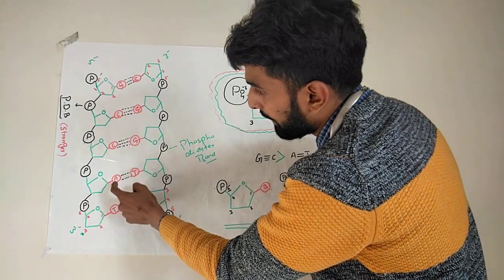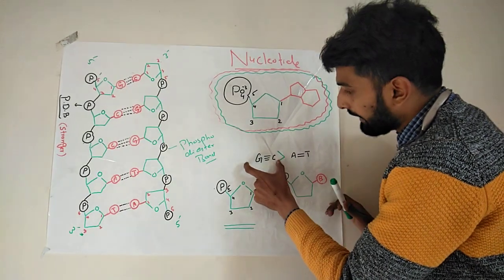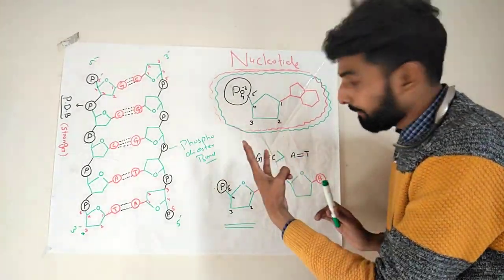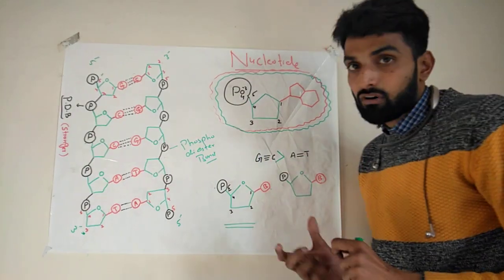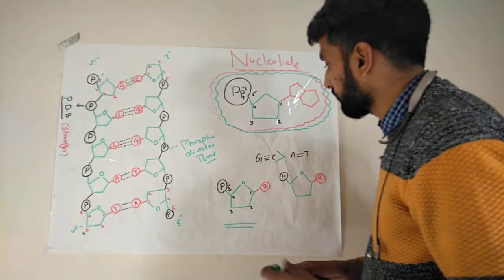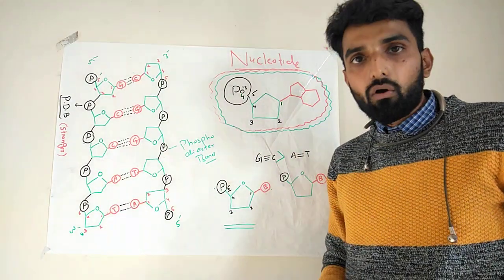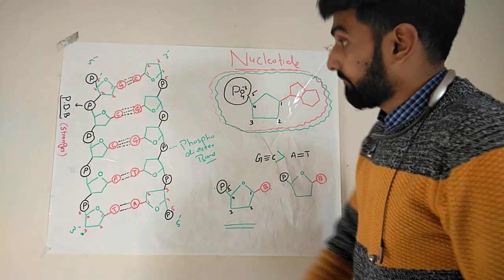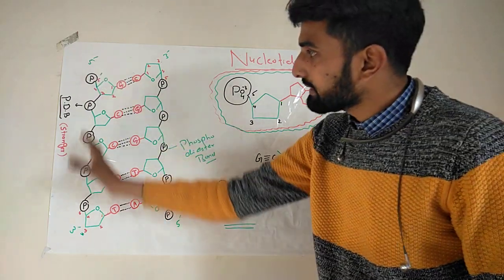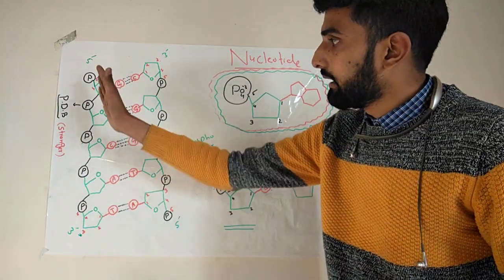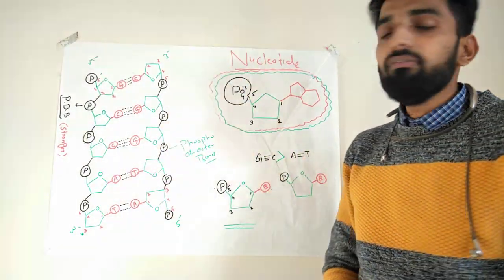If we compare the bond between adenine-thymine and cytosine-guanine, the GC bond is stronger than the AT bond because there are three hydrogen bonds. This concept is very important for DNA replication, which we will discuss in our replication lecture. The phosphodiester bond is stronger than these hydrogen bonds. In this way, both strands of DNA are formed by the arrangement of nucleotides.